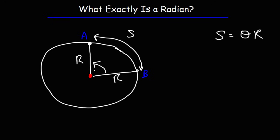So this is the angle measure. The arc length could be anything from 0 to 2 pi — even more than 2 pi. But when the arc length is equal to the radius of the circle, the angle is equal to one radian. And that's where the idea of a radian comes from.